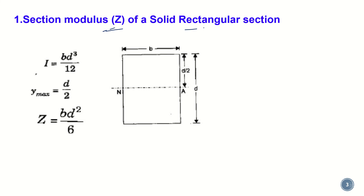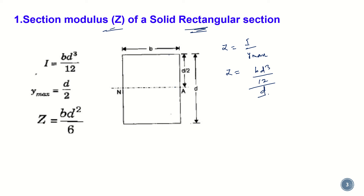Now we will see how to calculate section modulus for a solid rectangular section. Here is a rectangle with breadth b and total depth d, and the neutral axis lies at the center. The distance from the neutral axis to the outermost fiber is d/2, so y_max = d/2. The moment of inertia for a rectangle about its neutral axis is bd³/12. Therefore Z = I / y_max = (bd³/12) / (d/2), which simplifies to Z = bd²/6.